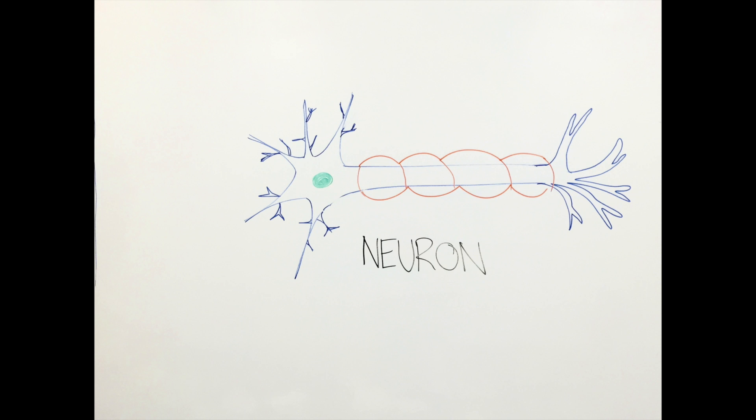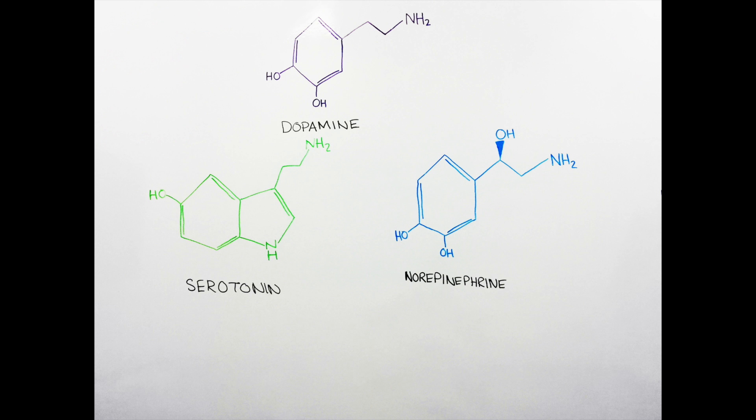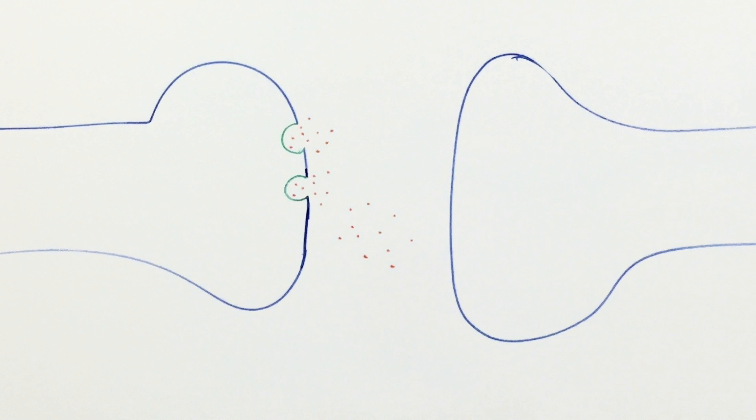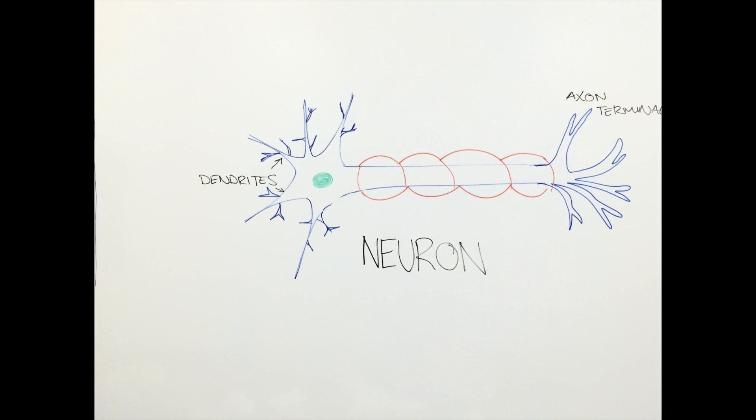What allows the signal to get from one neuron to another are tiny chemicals called neurotransmitters. Neurotransmitters are released from packages called vesicles from the end of one neuron, referred to as the axon terminal, to the beginning of the next neuron, called the dendrites.